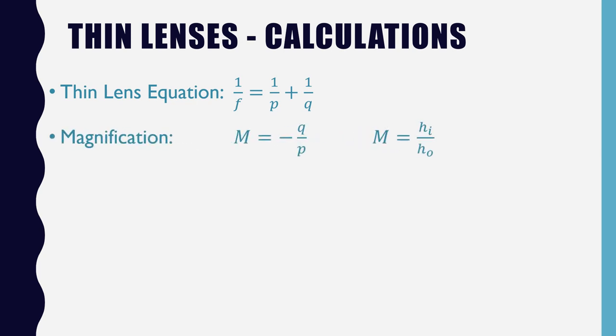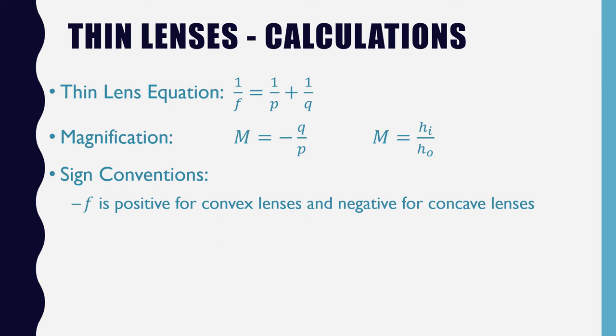Additionally, we can use those two magnification equations that we've already used. Much like with mirrors, there are some sign conventions that we need to know. The focal length is positive for convex lenses, just like it's positive for concave mirrors, and the focal length is negative for concave lenses, just like it's negative for convex mirrors. That's another similarity between convex lenses and concave mirrors and concave lenses and convex mirrors.